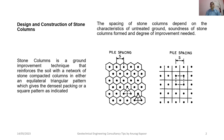The spacing of stone columns depends on the characteristics of the untreated ground, soundness of the stone columns found, and the degree of improvement needed. Here you have been shown two grid patterns: first is the triangular grid pattern forming a hexagonal arrangement, and second is the square grid pattern.